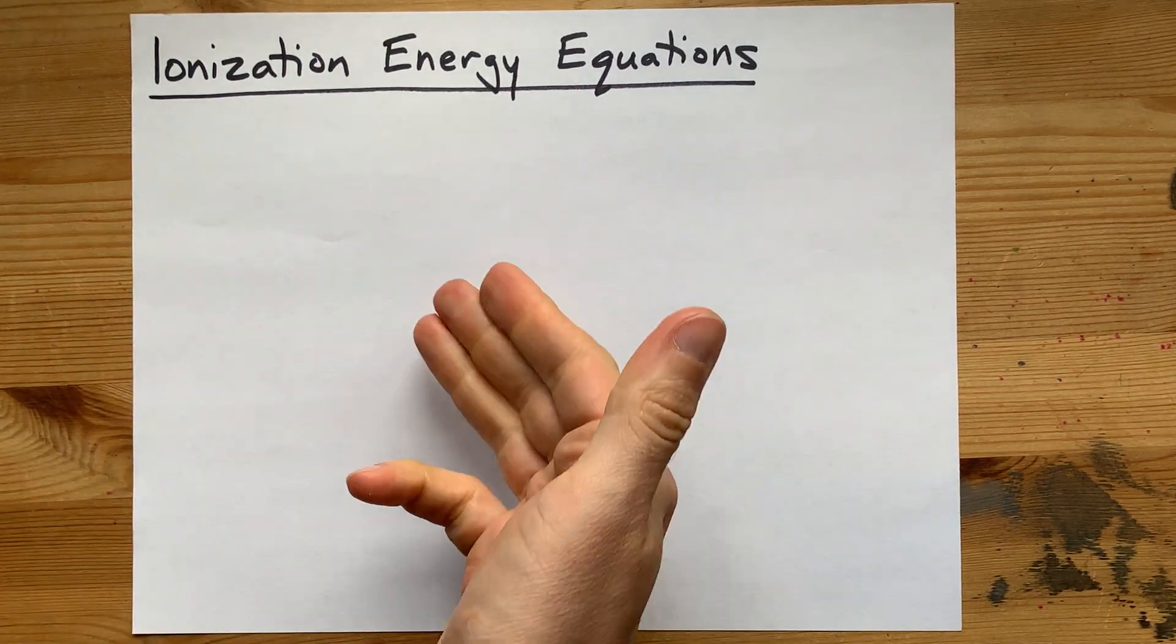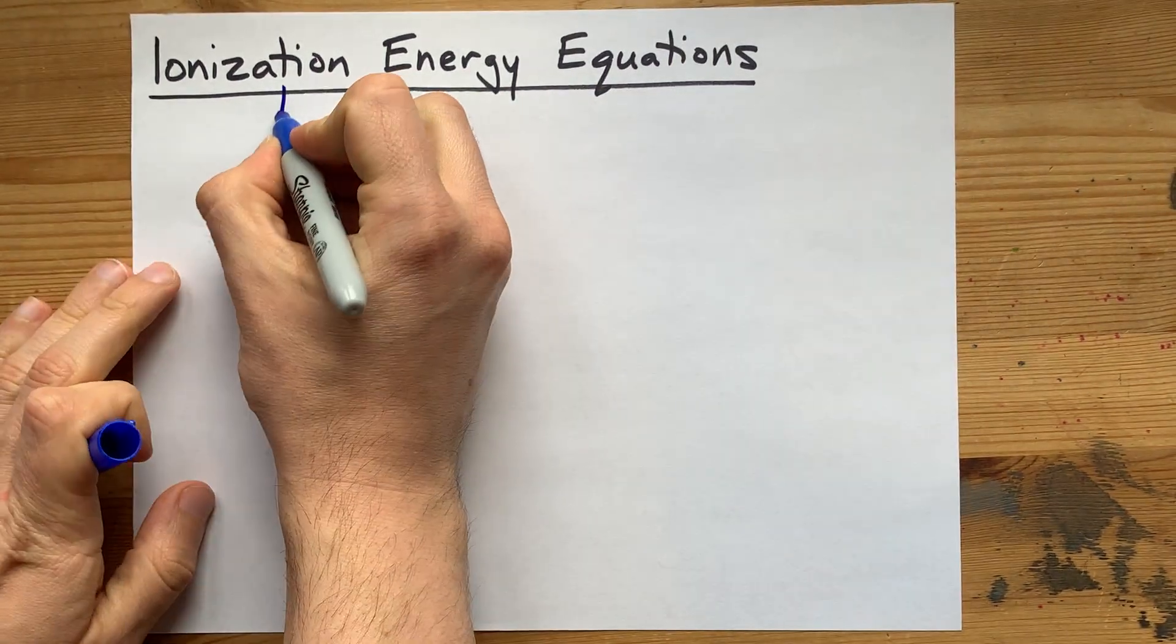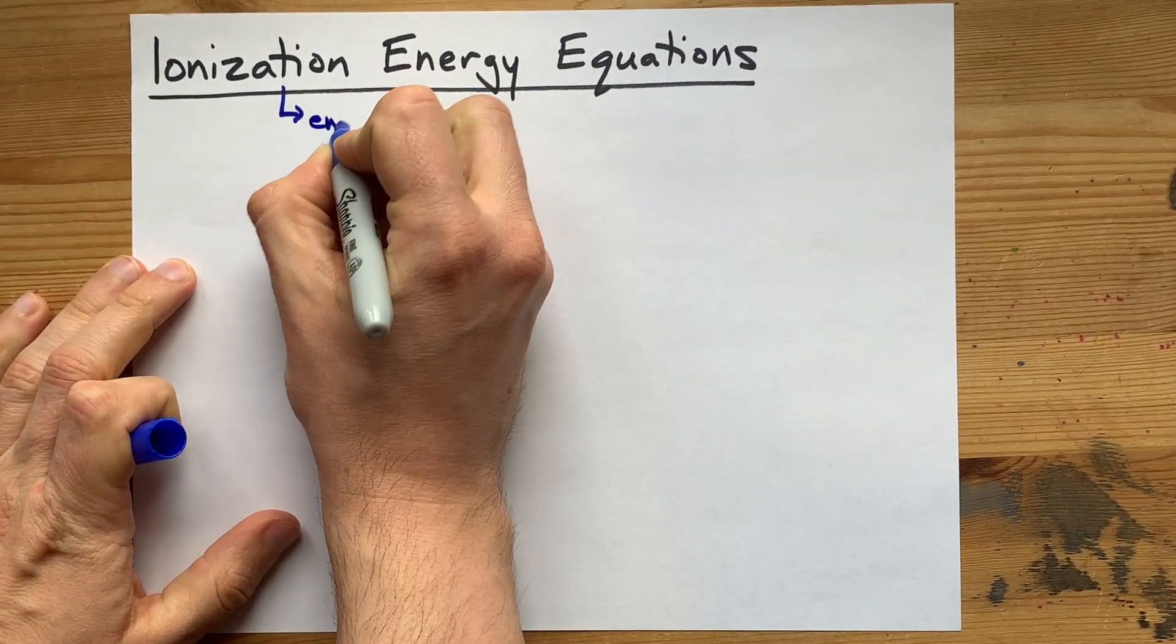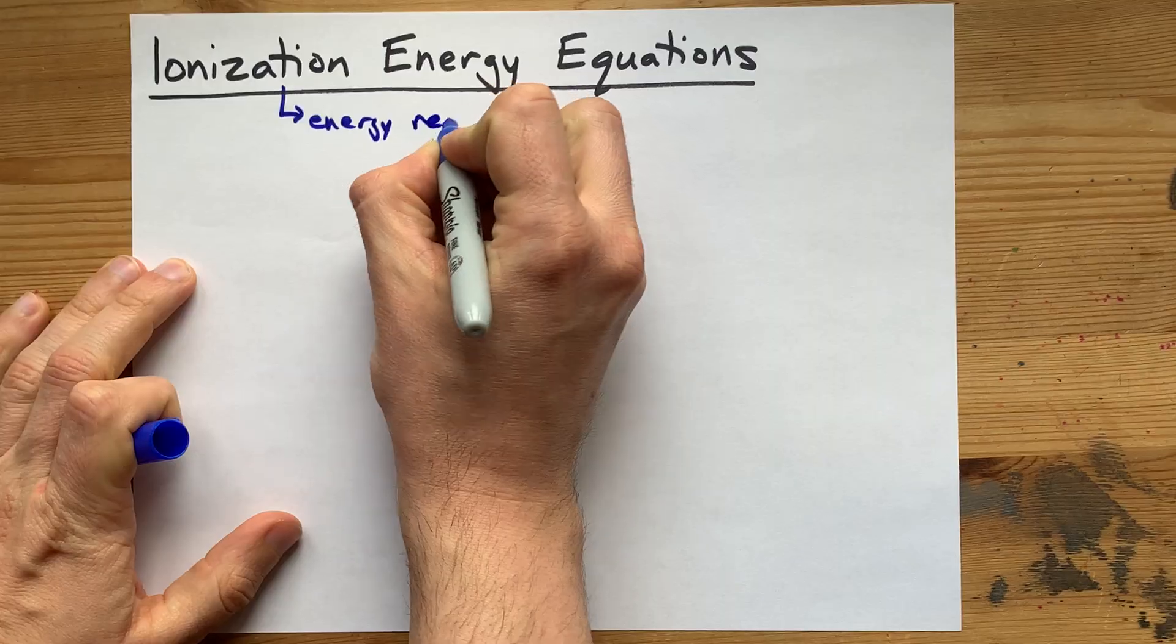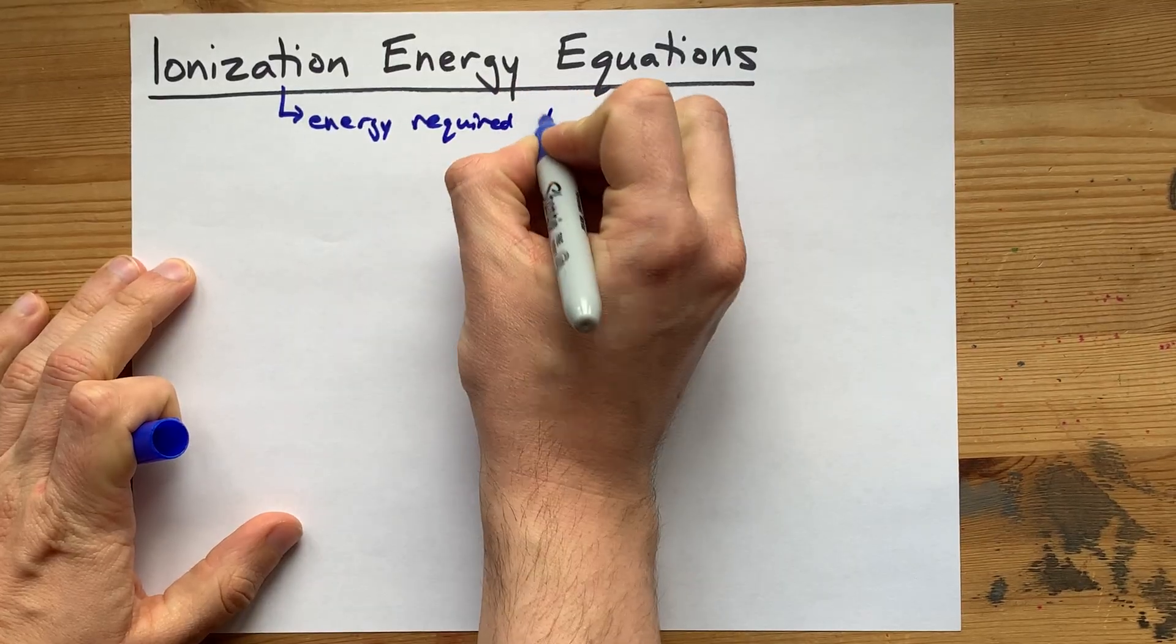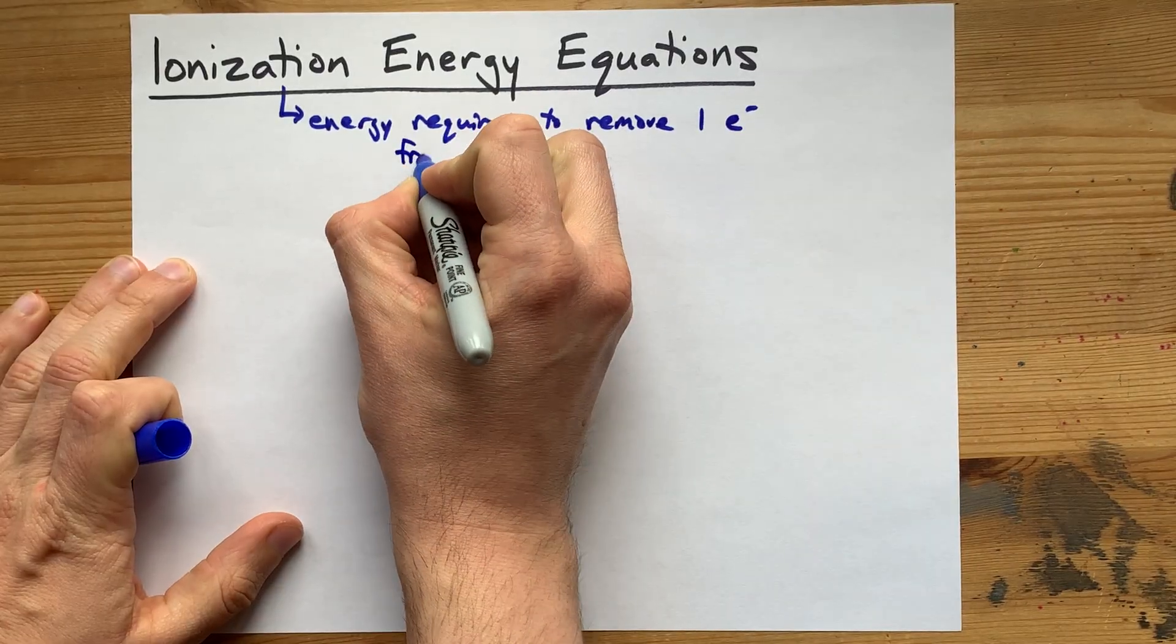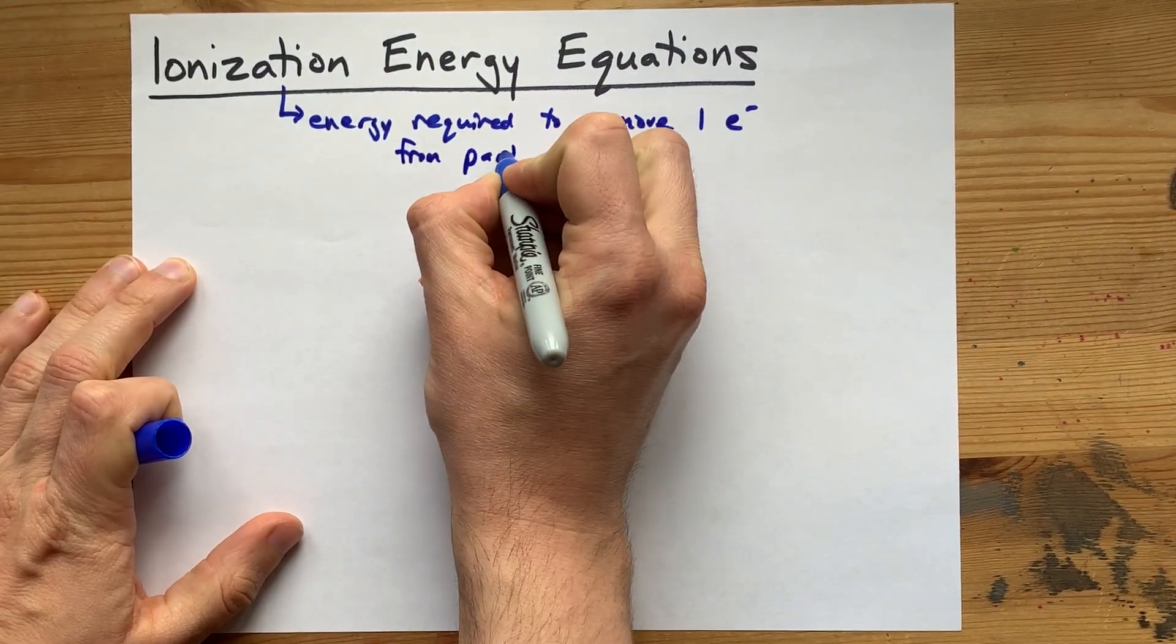What are the equations for the ionization energy of an atom? Well, ionization energy is the total energy required to remove one electron from a particle in the gas phase.